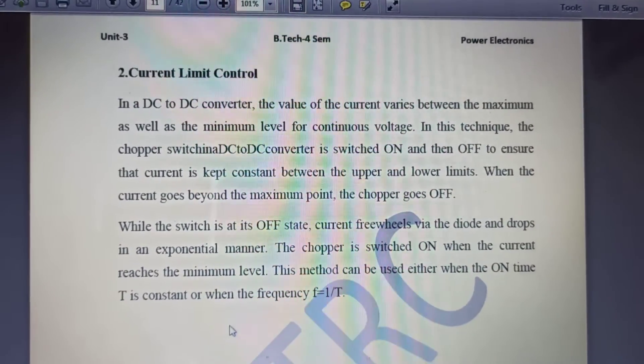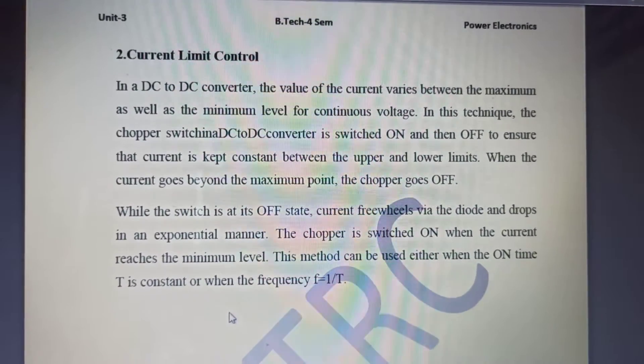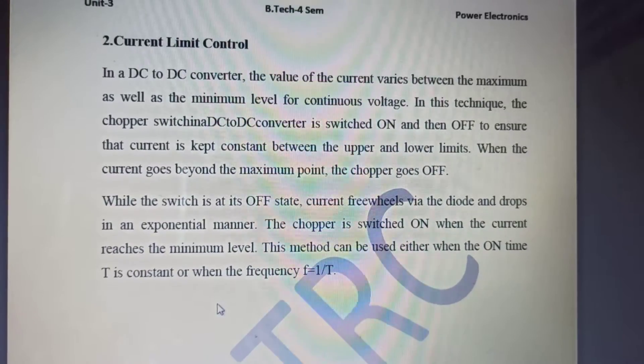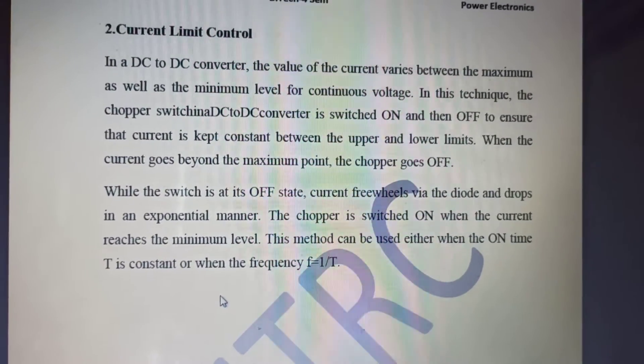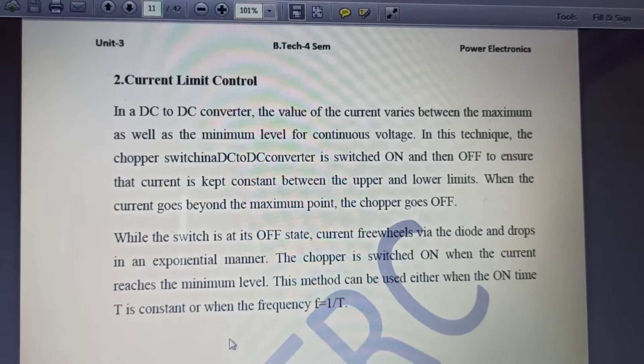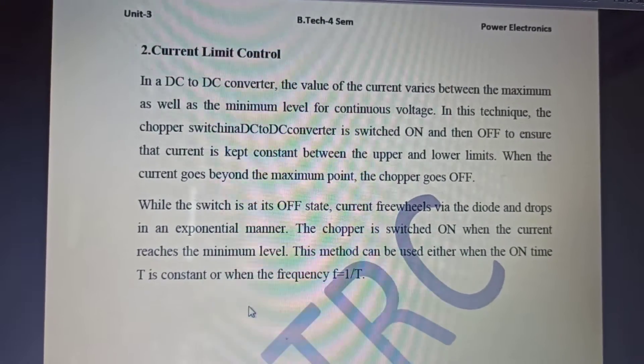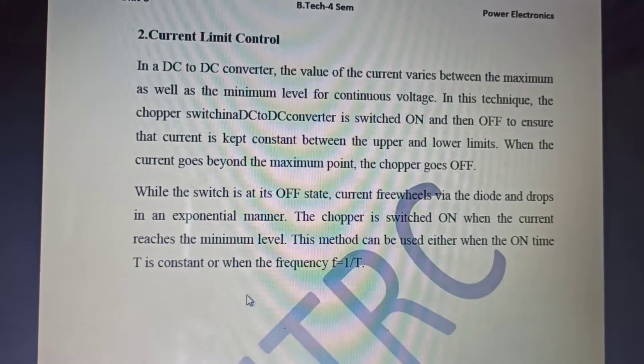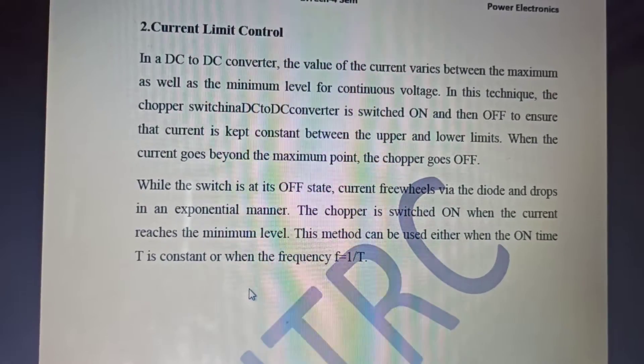Now coming to current limit control. Basically, current limit control deals with the hysteresis band. The thing is that the current will vary in between a prescribed band. There will be a set maximum and minimum level of voltage, and in this time the chopper in the DC to DC converter will be switched on and off so that the current remains well between the upper and lower limits.